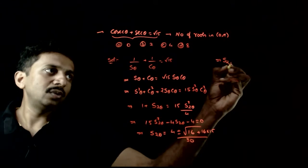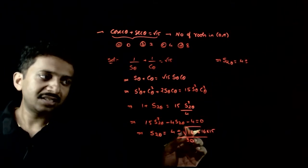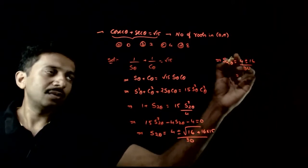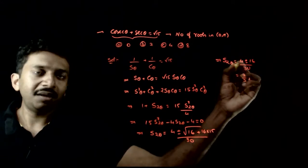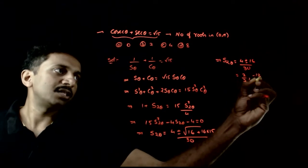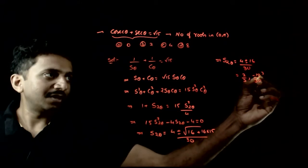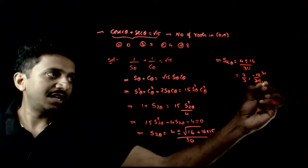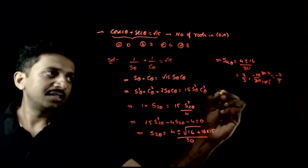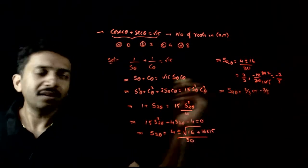This implies sin 2 theta equals 4 plus or minus root of 16 into 16, that is 16, by 30. Adding gives 20 by 30, subtracting gives minus 12 by 30. After cancellation, sin 2 theta equals 2 by 3 or minus 2 by 5.